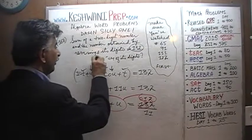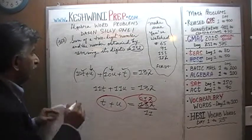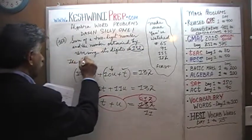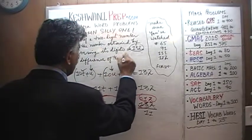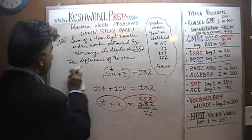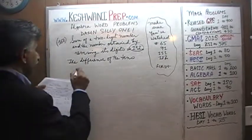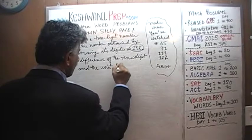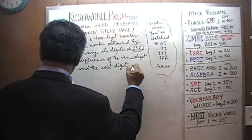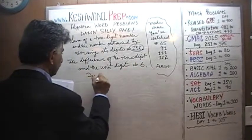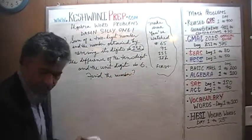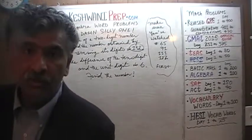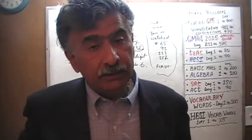I need the room, so we have to erase it. Instead of saying 'what is the sum of the digits,' I went on to say: the sum of a two-digit number and the number obtained by reversing its digits is 132, and the difference of the tens digit and the units digit is 6. Then the question was: find the number. That's how I originally put together the question.